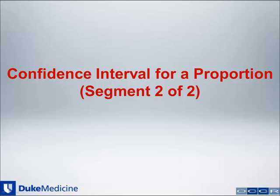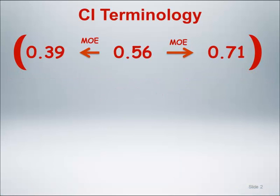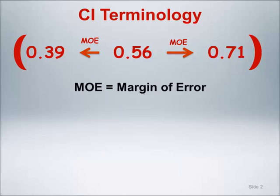In this second segment, we will continue our discussion of the confidence interval of a proportion. Let's cover some confidence interval terminology. The MOE, or margin of error, represents the distance from the parameter estimate — here 0.56 — to the lower or upper end of the confidence interval.